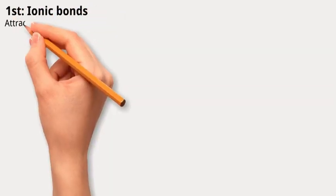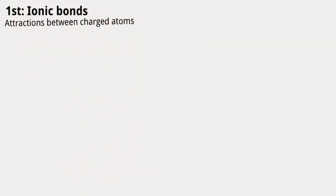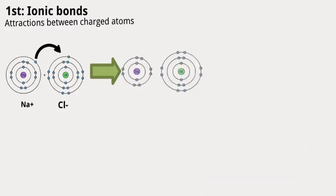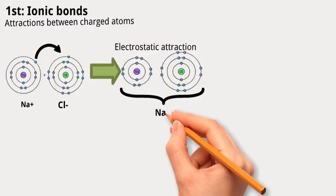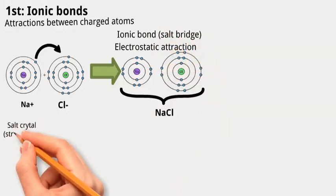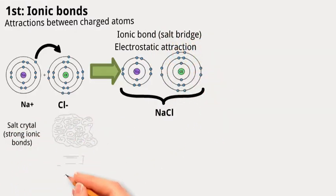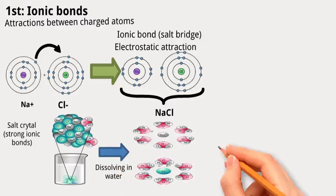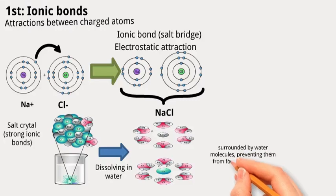Ionic bonds are attractions between charged atoms. In table salt, for instance, positively charged sodium and negatively charged chlorine ions are held together by these electrostatic attractions. This bond is known as an ionic bond or salt bridge. While ionic bonds within a salt crystal can be strong, when salt dissolves in water, individual ions are surrounded by water molecules, preventing them from forming strong ionic bonds.